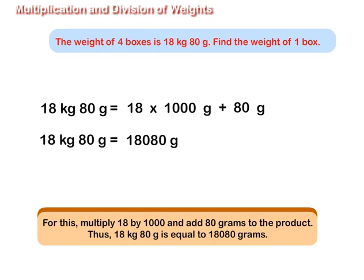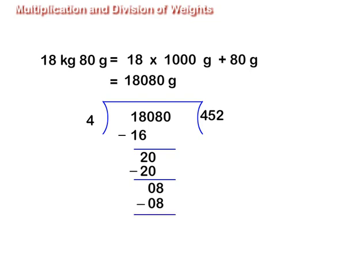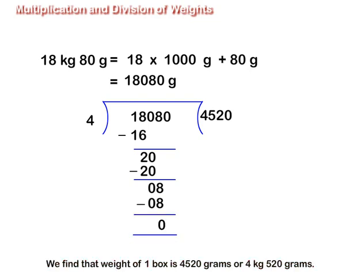Thus, 18 kilograms 80 grams is equal to 18,080 grams. Now, divide 18,080 grams by 4 to find out the weight of 1 box. We find that the weight of 1 box is 4,520 grams, or 4 kilograms 520 grams.